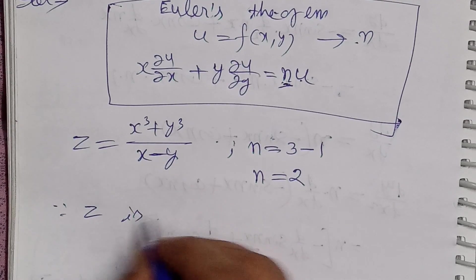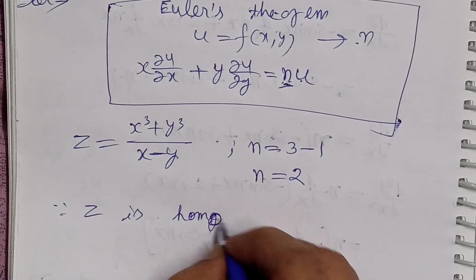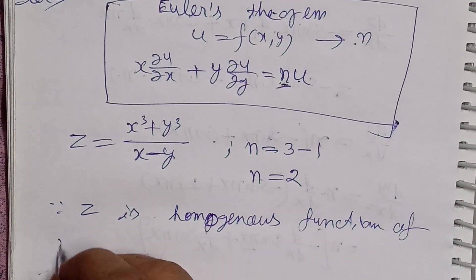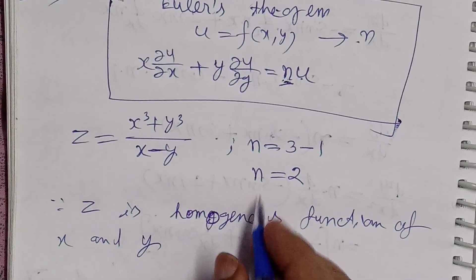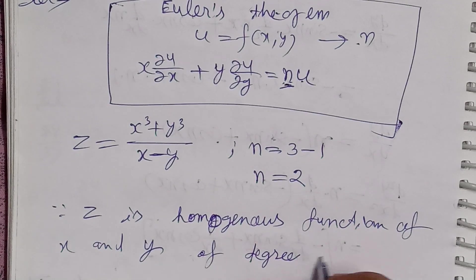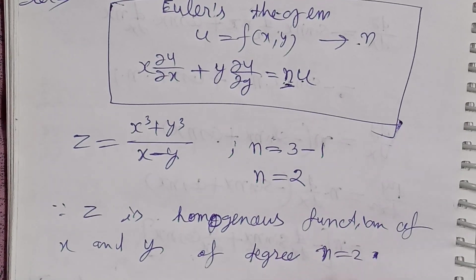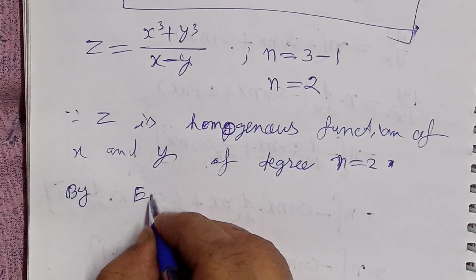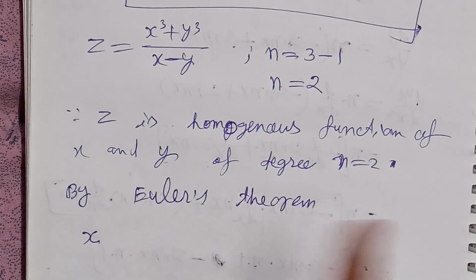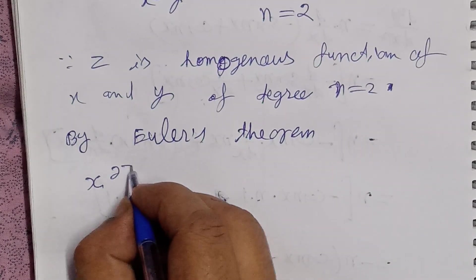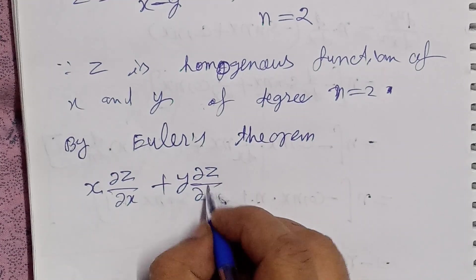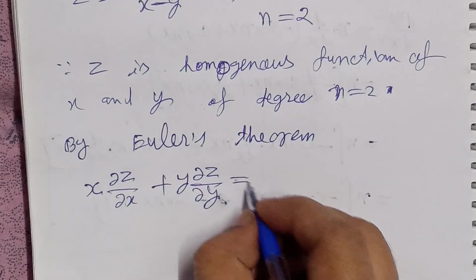So z is a homogeneous function of x and y, independent variables, of degree 2, meaning n is equal to 2. By Euler's theorem, the independent variable x times the dependent variable z upon del x, plus the other independent variable y times dependent variable z upon del y, equals n into z.